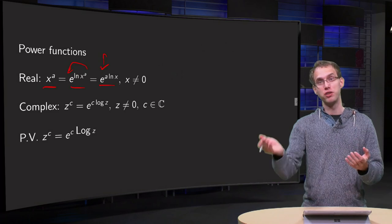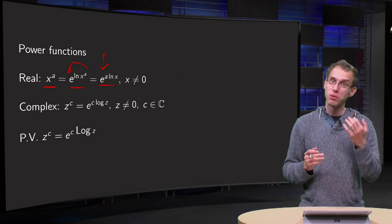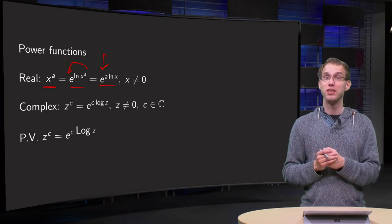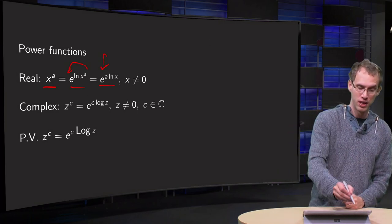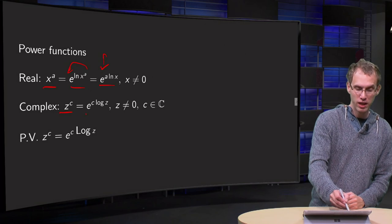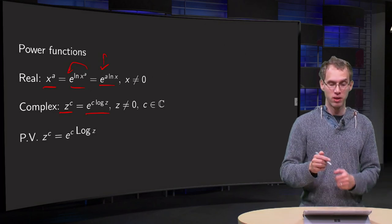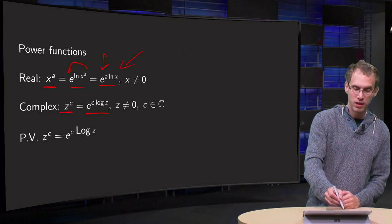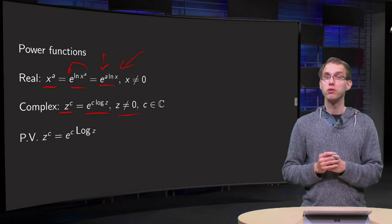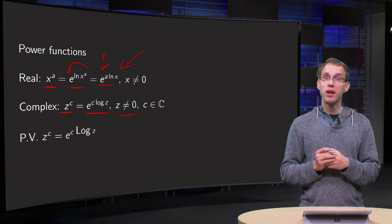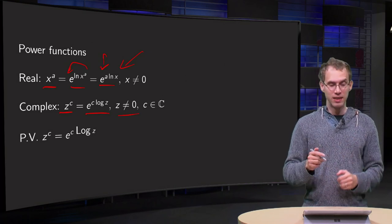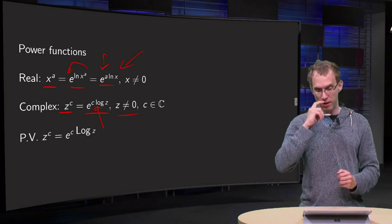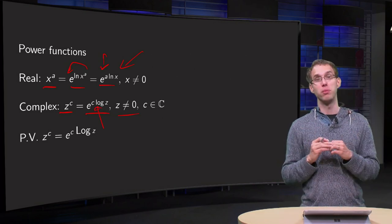We know the exponential function and logarithm, so we can do the same for the complex functions, and that's how we will define the complex power functions. Z to the power c is just e to the power c times log of z — a complete analog of its real counterpart. Of course you can only do that if z is not equal to zero. You immediately see that we have a small log here, so your complex function becomes multi-valued.